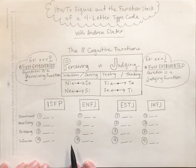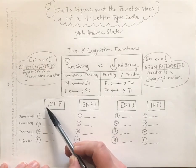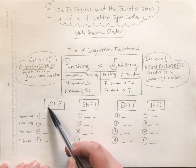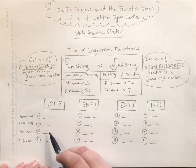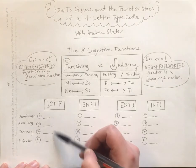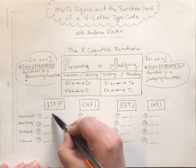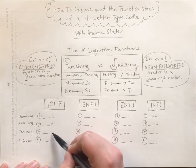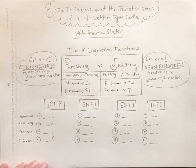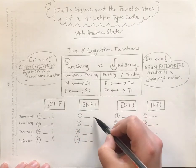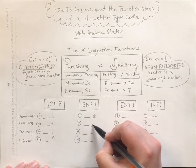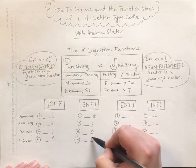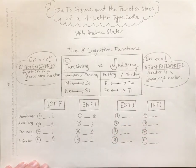For an ISFP, we know that their dominant function is an introverted function because we have an I as the first letter. So we alternate all the way down the stack: I, E, I, E. We'll do ENFJ as well — the first letter is E, so we start with E, then I, E, I. Now we already have that alternated order established.